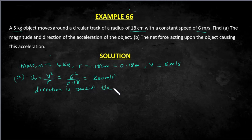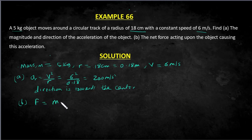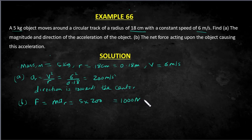The direction is towards the center because it's centripetal force. For part b, we need to find the net force acting upon the object causing this motion. That force is the centripetal force, which equals mass times centripetal acceleration. The mass is 5 and the centripetal acceleration is 200, giving us 1000 newtons. So that is the solution.